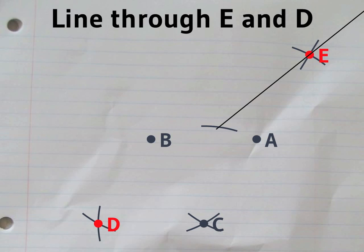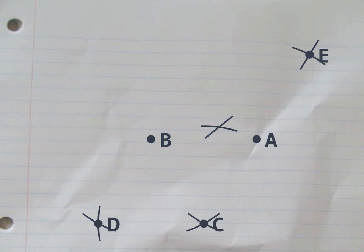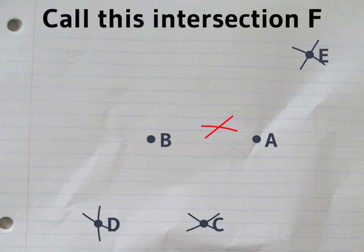Now draw a line through E and D. That meets the circle with center C. At this point we'll call F.